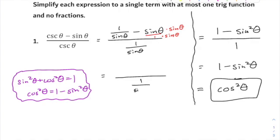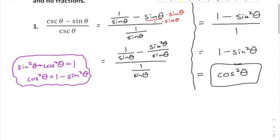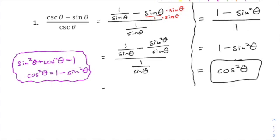I still have 1 over sine, minus, and when I convert that second fraction, that's going to give you sine squared over sine of theta. Then you can put those together, 1 minus sine squared over sine of theta, all divided by 1 over sine of theta.